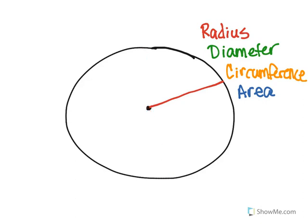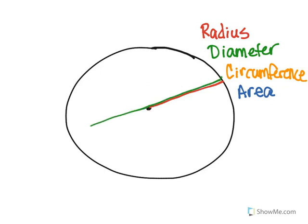Now, diameter is going across from one end to the other, going through that center point. If you notice, the diameter — if I just go right here — the diameter is two times the radius. So 2R is equal to your diameter.